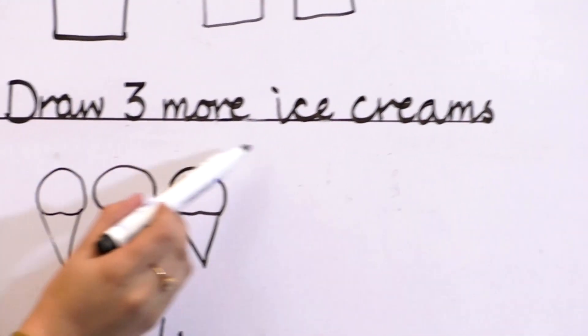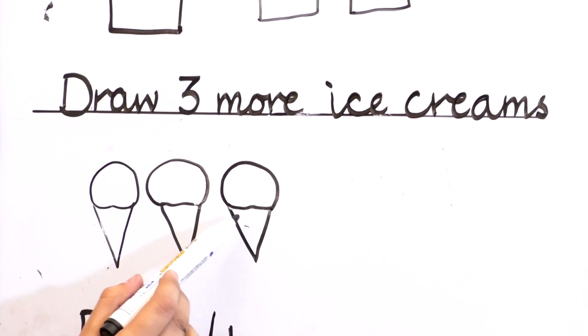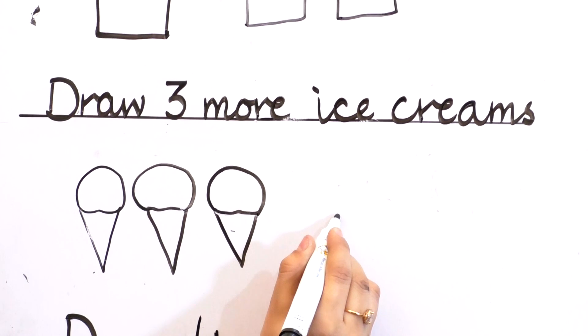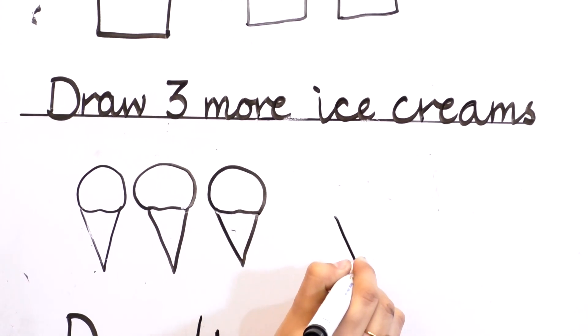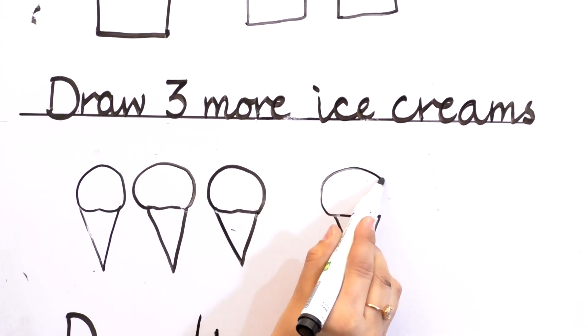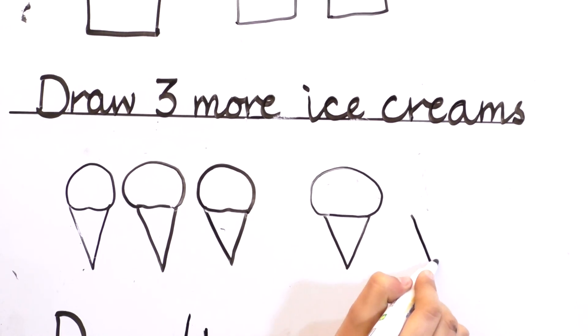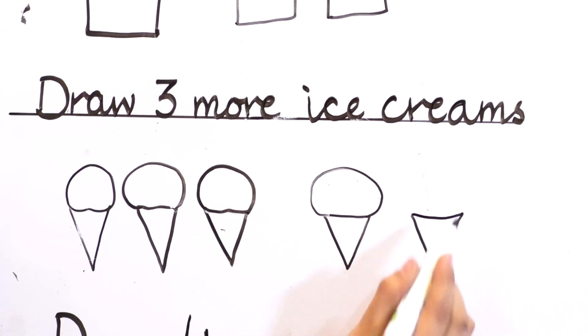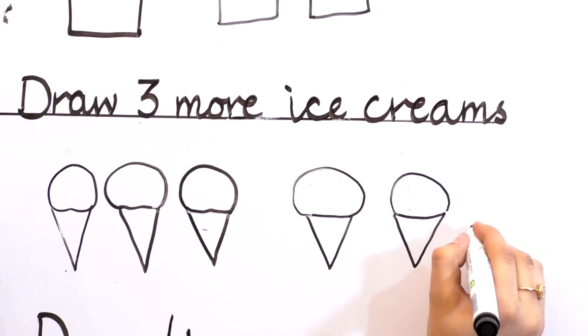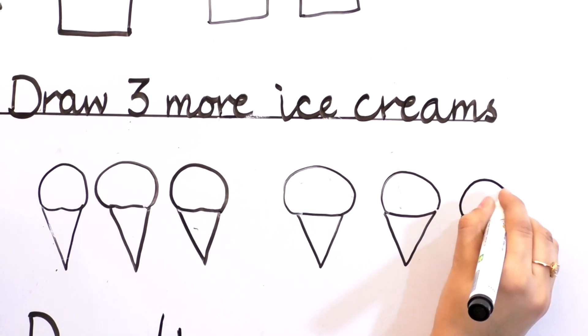Next is draw three more ice creams here. We have three ice creams here: one, two, three. But we have to draw three more. Let's draw. First of all, you have to make here a triangle shape and then make a scoop of ice cream. One. We add one more, one more, one more. Again make a scoop here. Two. We add three more ice creams here.